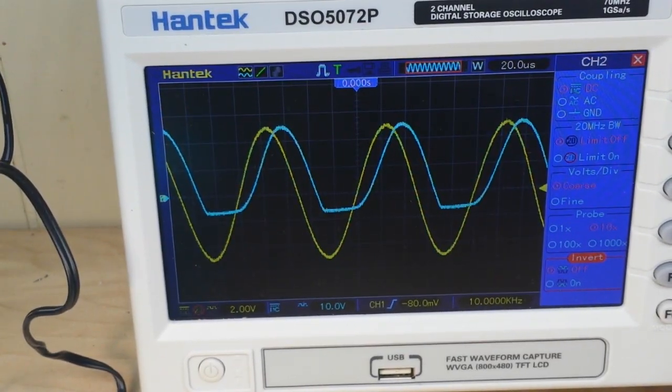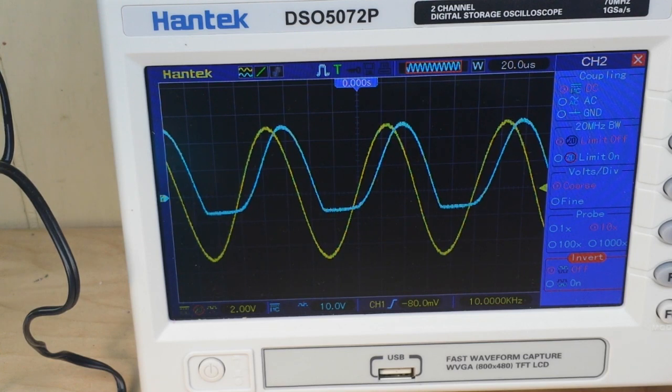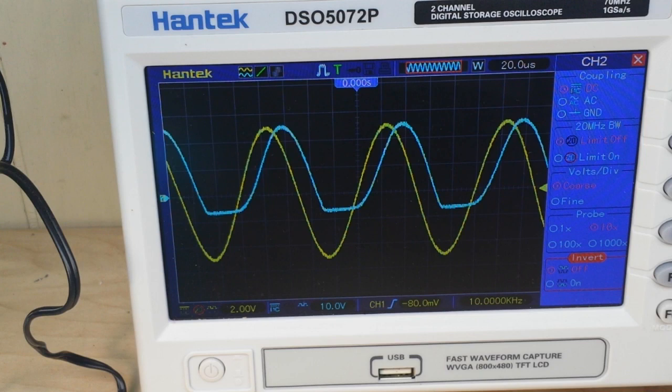The yellow sine wave on channel one is the input wave. The blue wave on channel two is the clipped wave. So you can see how the Zener has clipped off the bottom of the wave. If we were to put two Zeners together cathode to cathode we could clip the bottom and the top of the wave, and that's kind of a poor man's way of turning a sine wave into a square wave, kind of like a pseudo analog to digital converter.